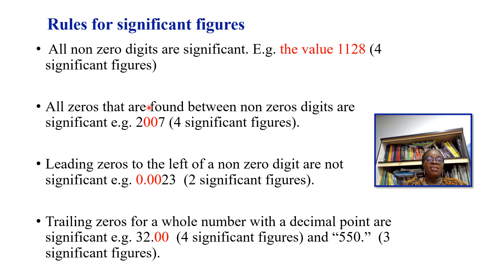Rule number three says leading zeros to the left of a non-zero digit are non-significant. For example, in 0.0023, all the zeros to the left are leading zeros and are non-significant. So in 0.0023 we have just two significant figures — the zeros are simply placeholders.